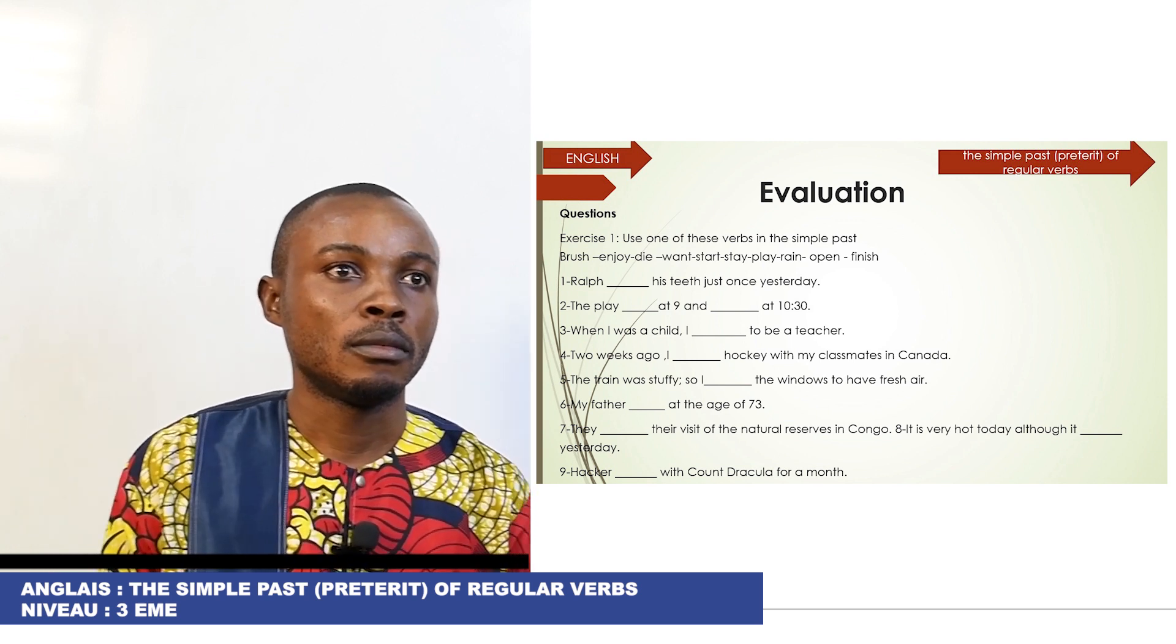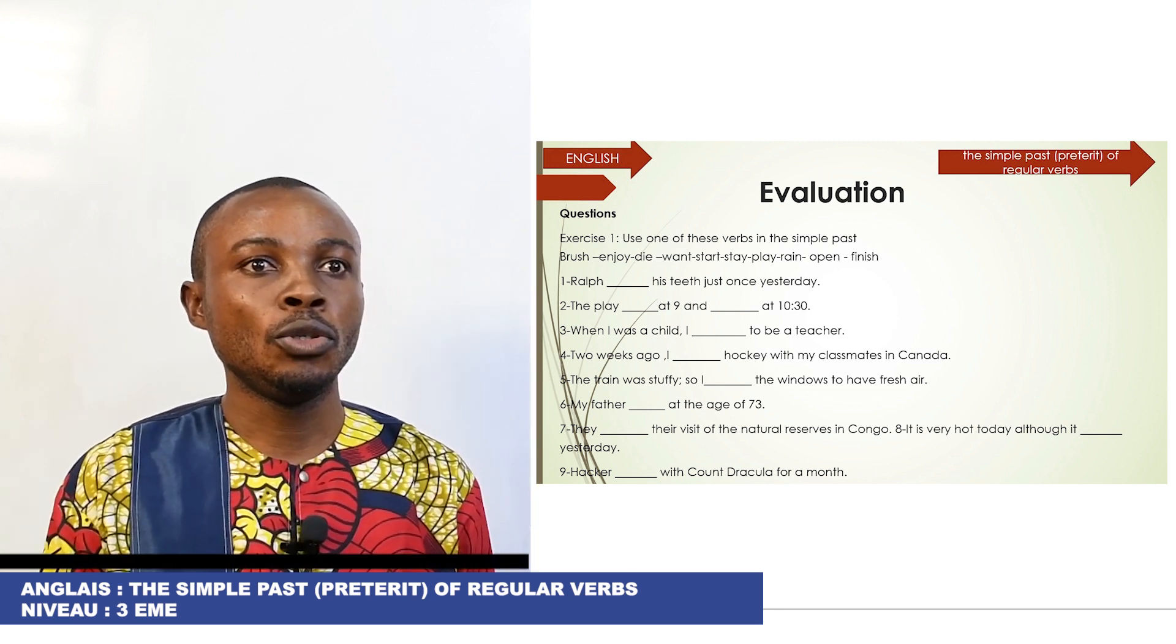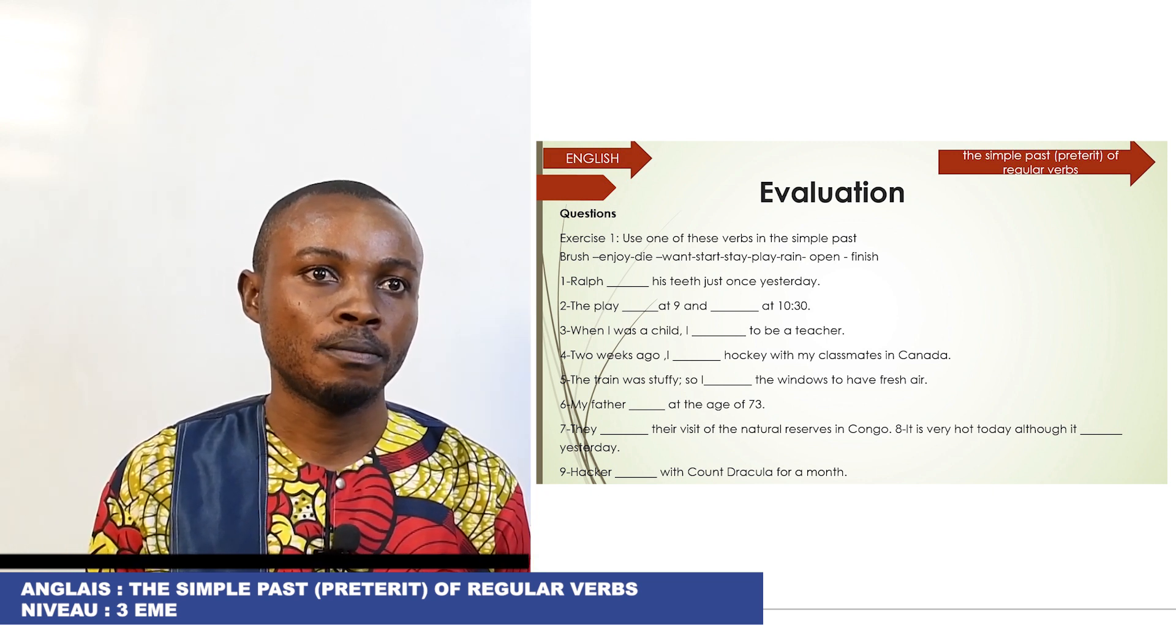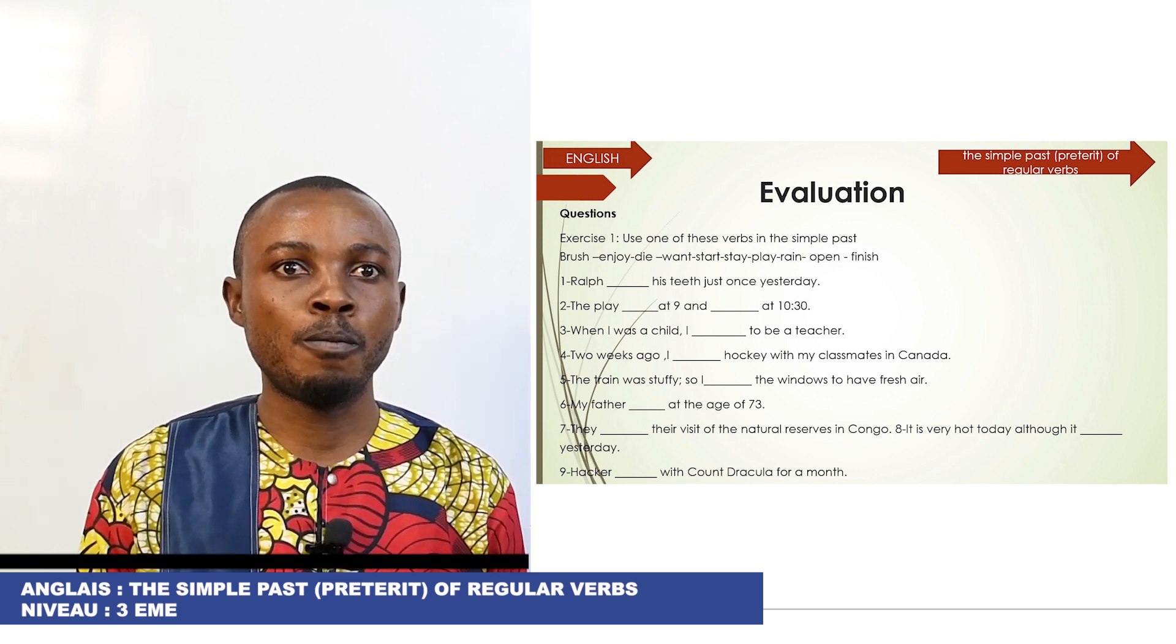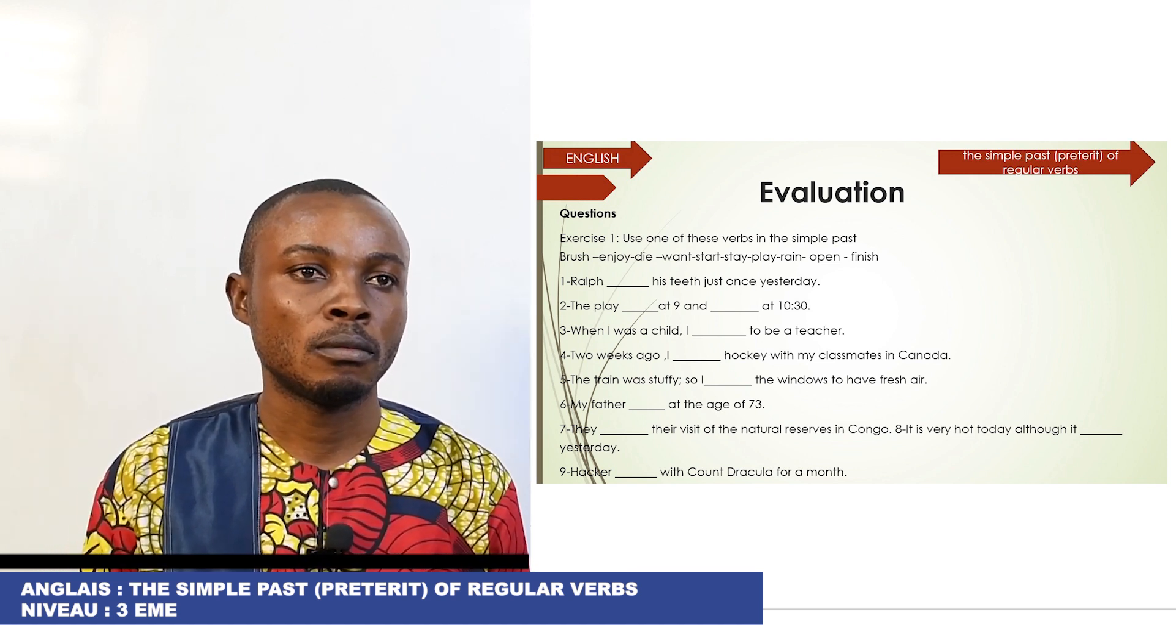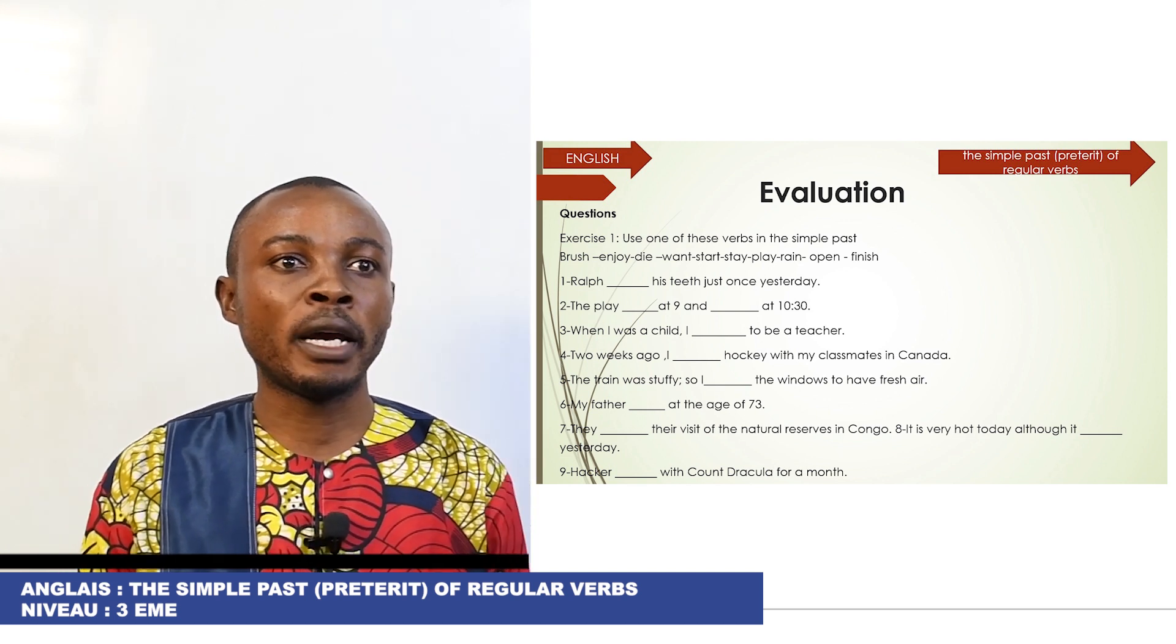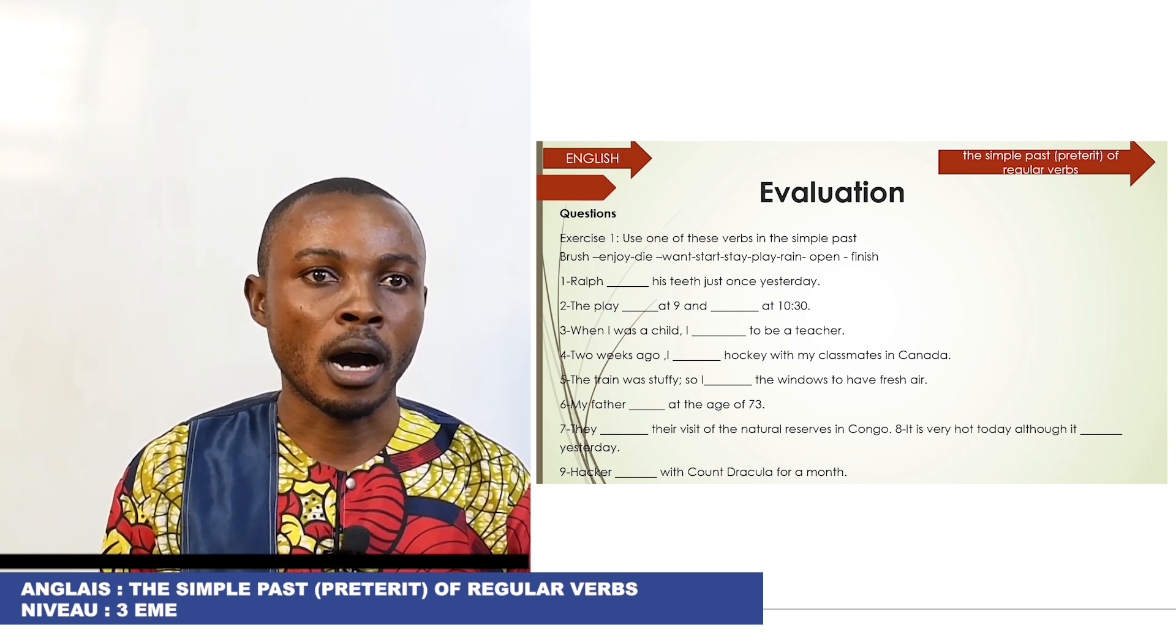Now, we have an evaluation. Exercise 1: Use one of the verbs in the simple past. Reach, enjoy, down, want, start, stay, play, read, open, finish. Sentence number 1: Steve just runs yesterday. Number 2: They play at 9 and at half past 10.